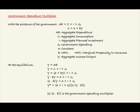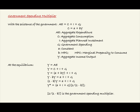Now at the equilibrium, Y equals AE. We can define AE as C plus I plus G. Therefore, Y equals C plus I plus G. We can further define C as A plus BY, so Y equals A plus BY plus I plus G. If we subtract BY from both sides of the equation, we have Y minus BY equals A plus I plus G.